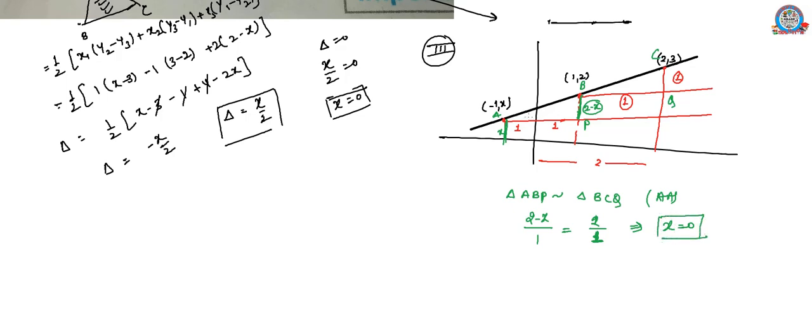Here we can also use trigonometry. We know that if this angle is theta then this one is also theta, and the relation between sides is perpendicular and base which is represented by tan theta. In the first triangle we can say tan theta equals (2 minus x) upon 2, and in the second triangle tan theta equals 1 upon 1.